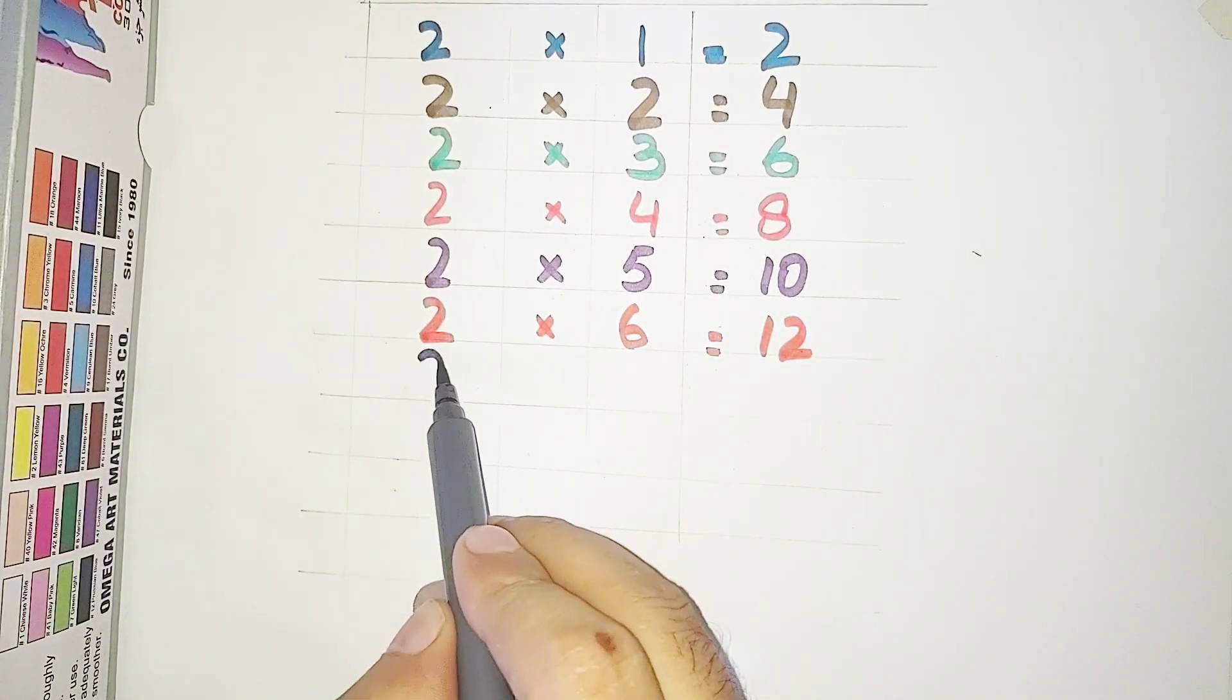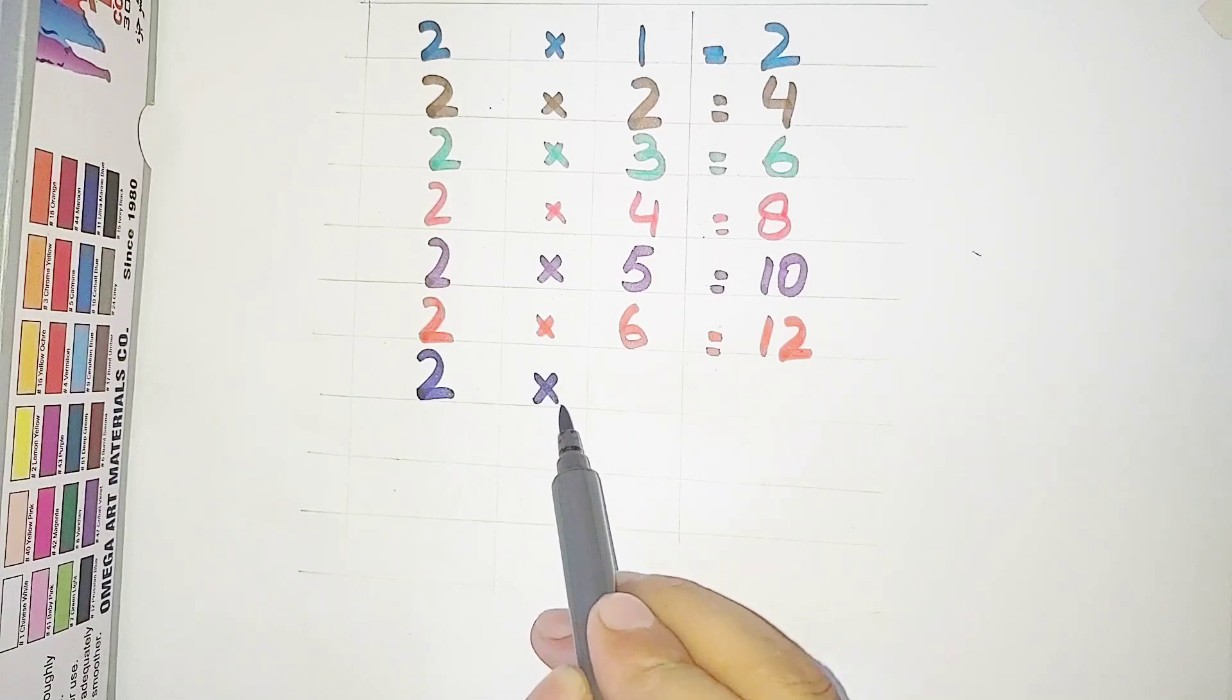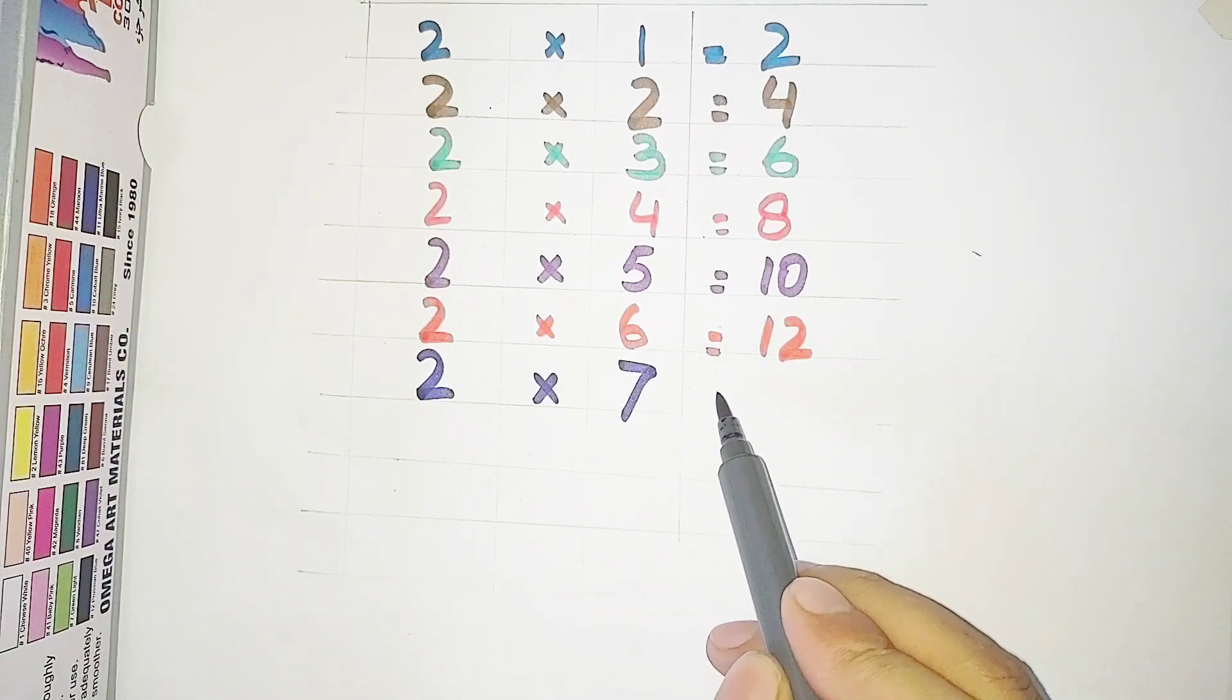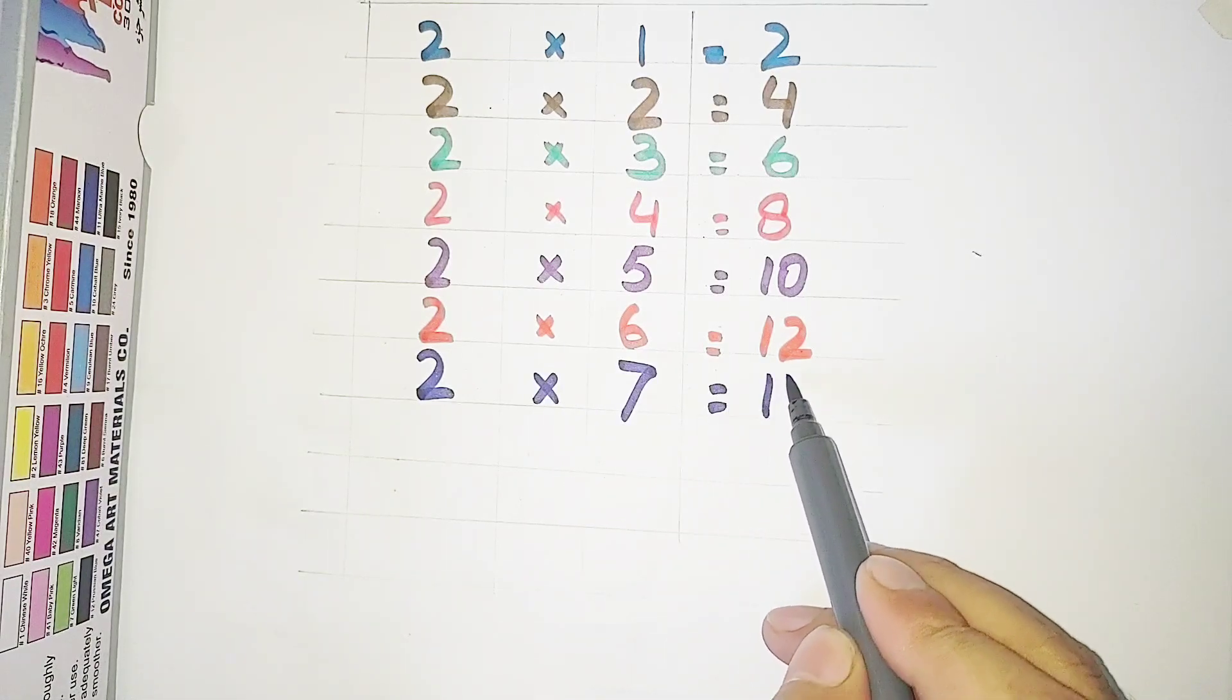2 multiplied by 7 is equal to 14. 2 sevens are 14.